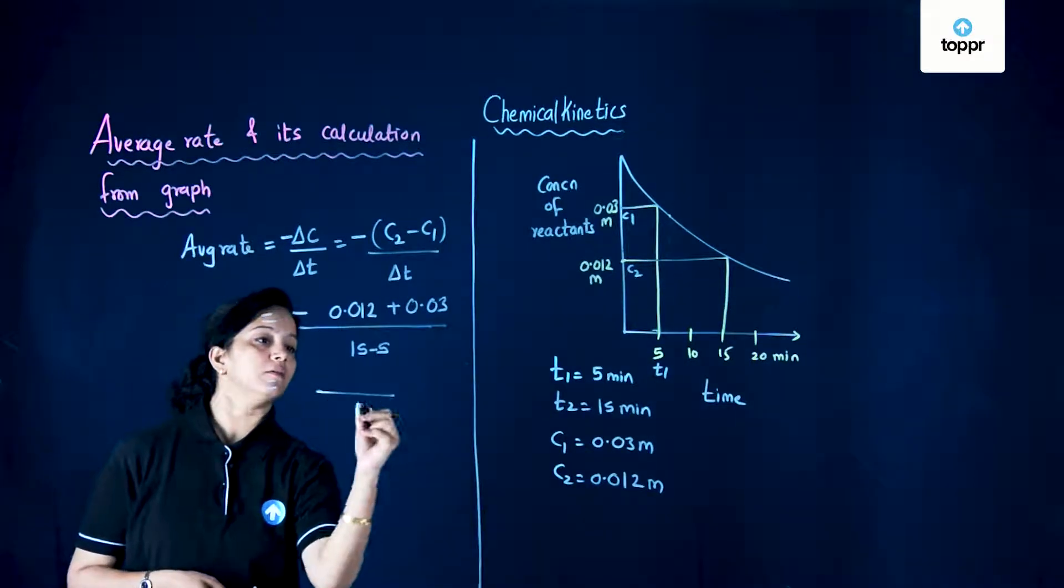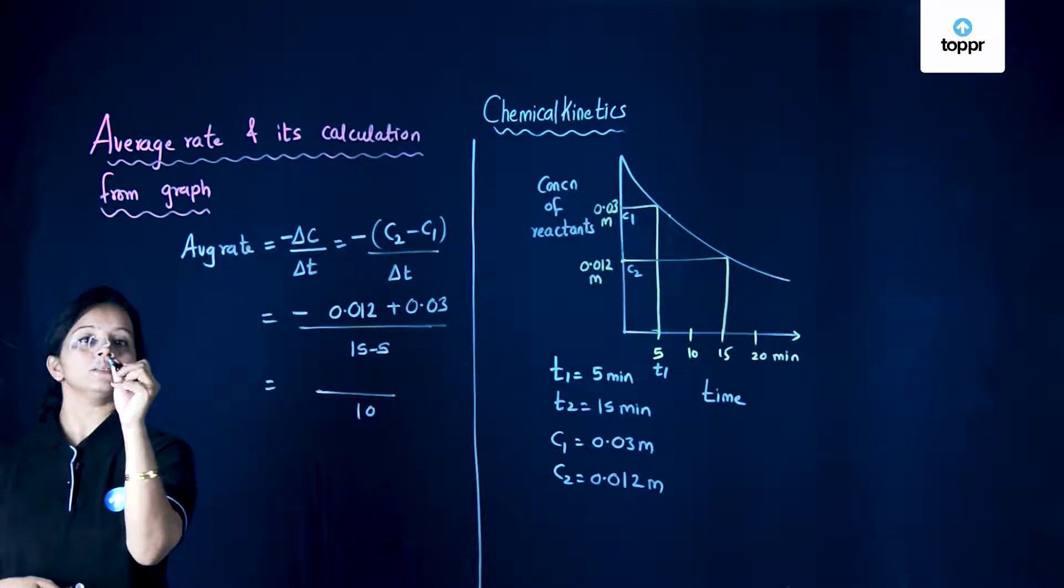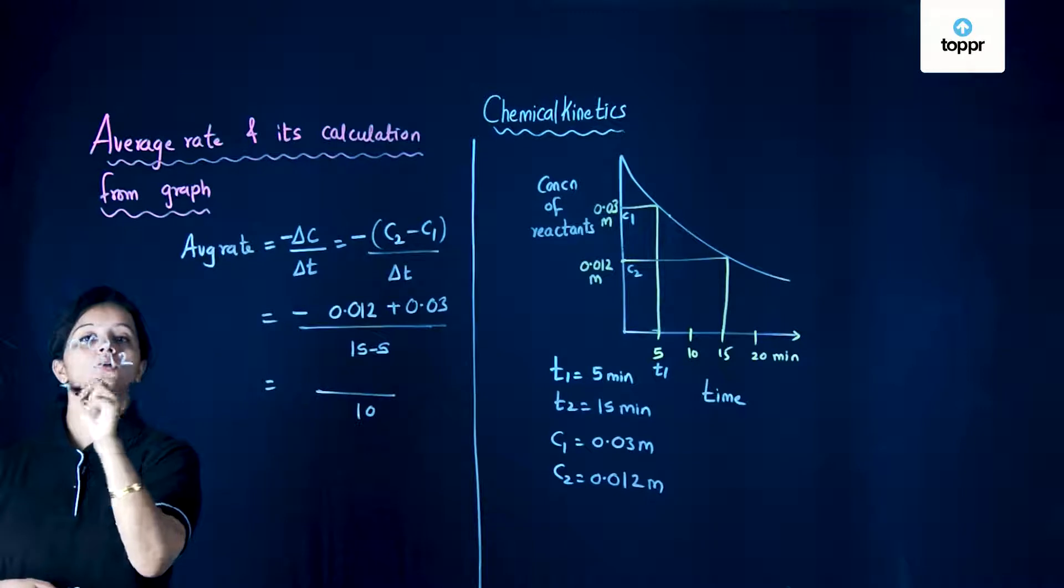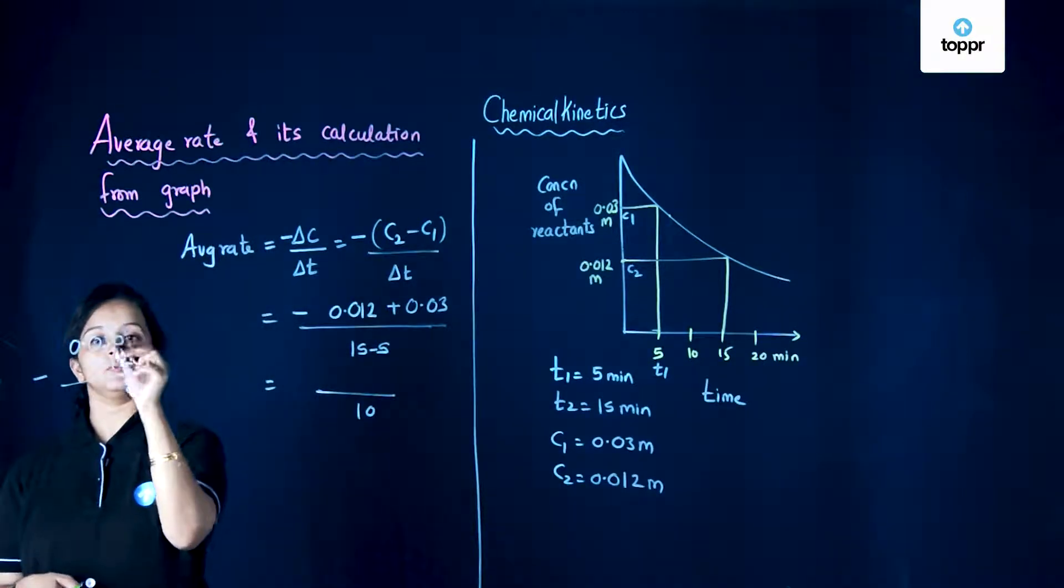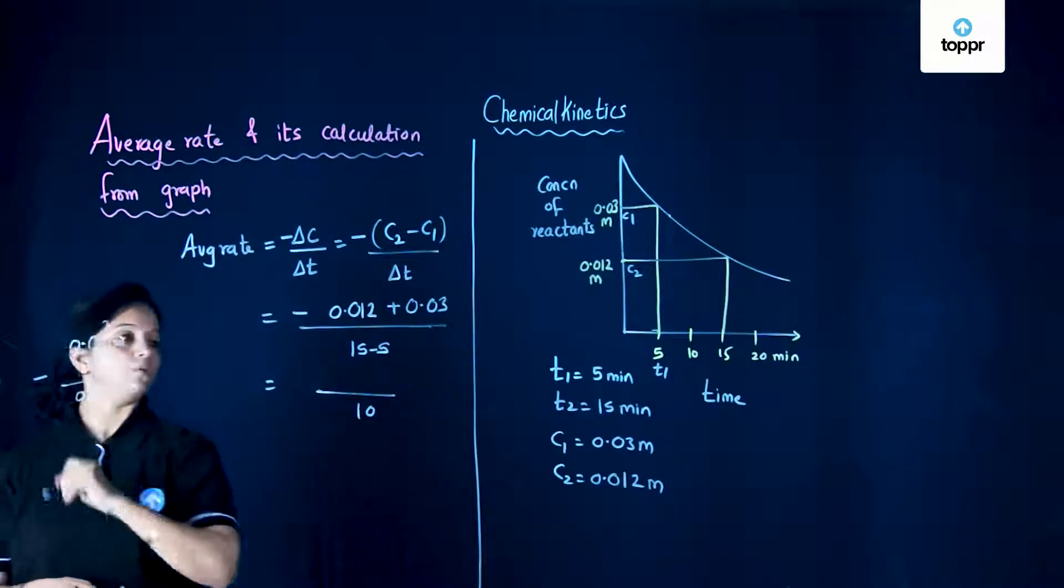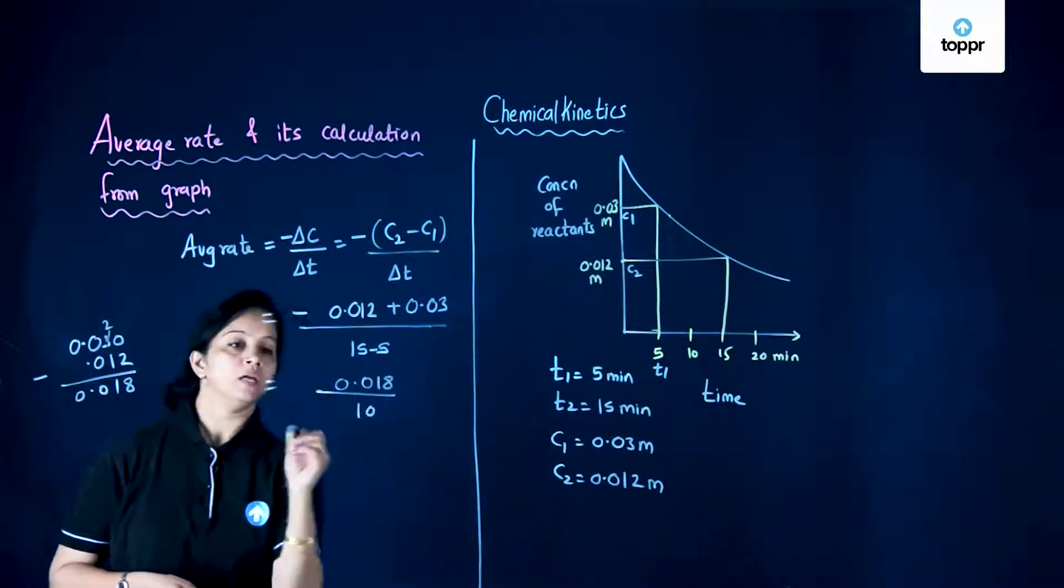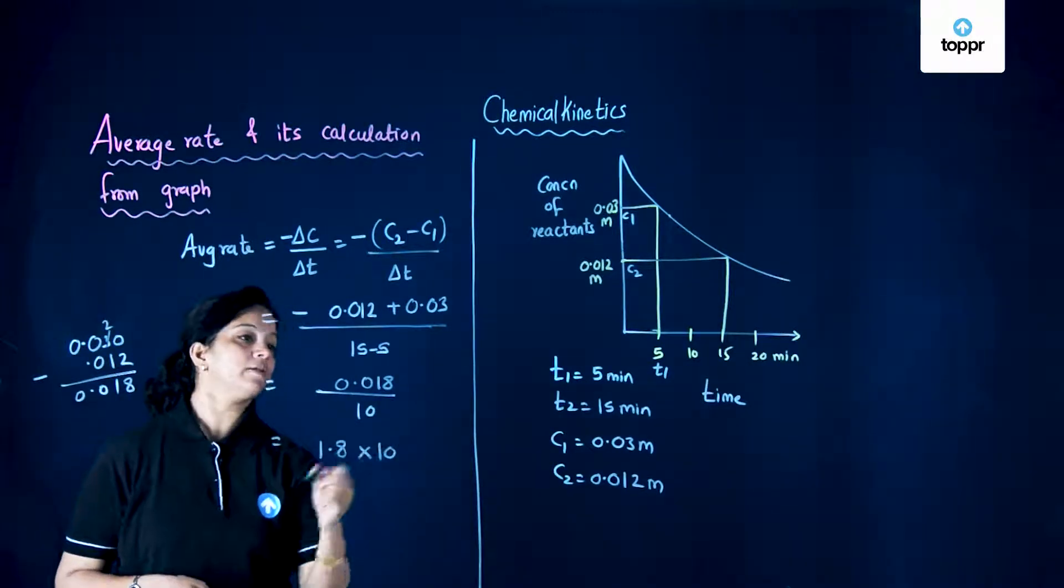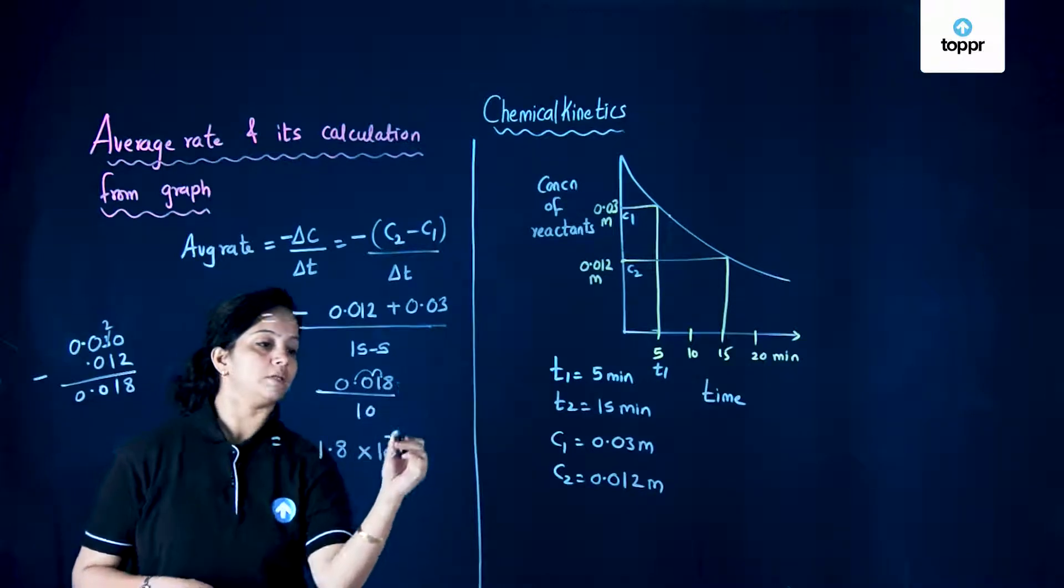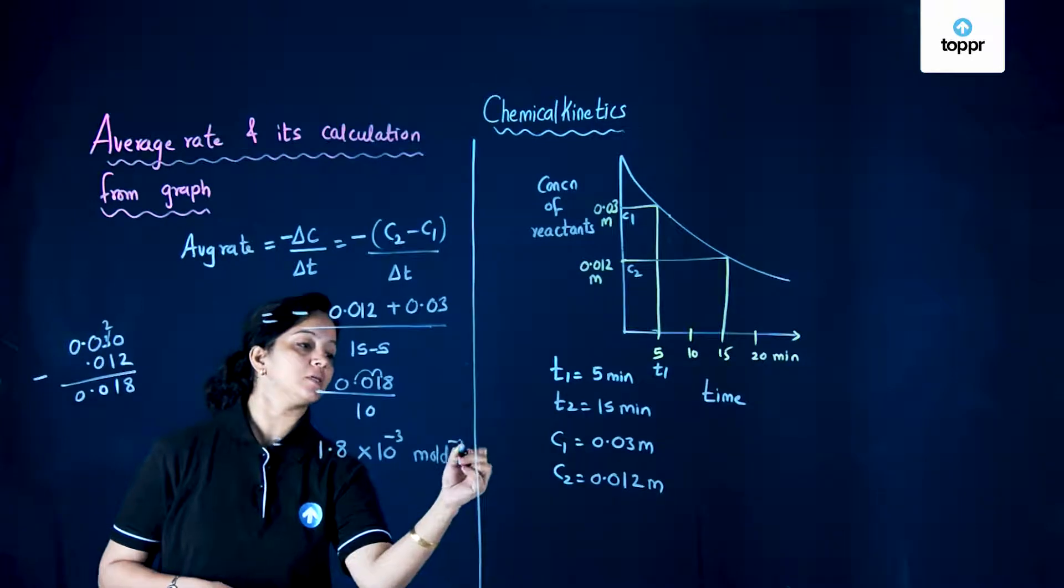When we calculate, we get 10, and 0.03 minus 0.012 gives us 0.018. So at the end we write 1.8 into 10 raised to minus 3, and this is mole per decimeter cube per minute.